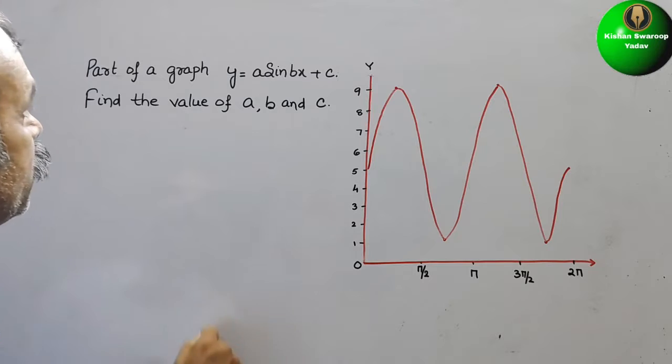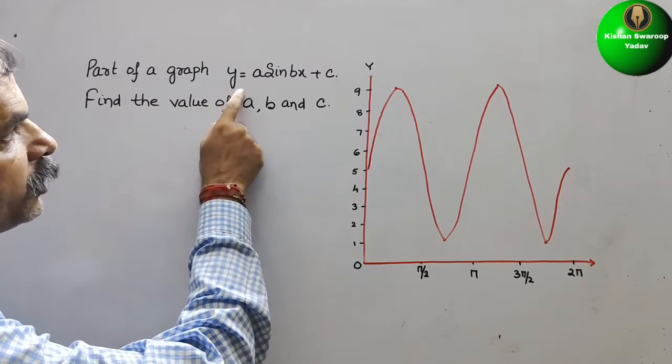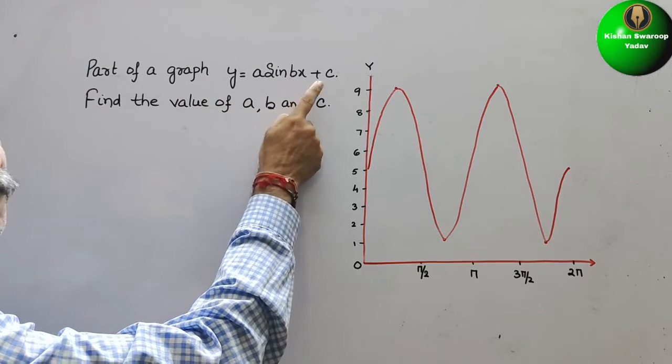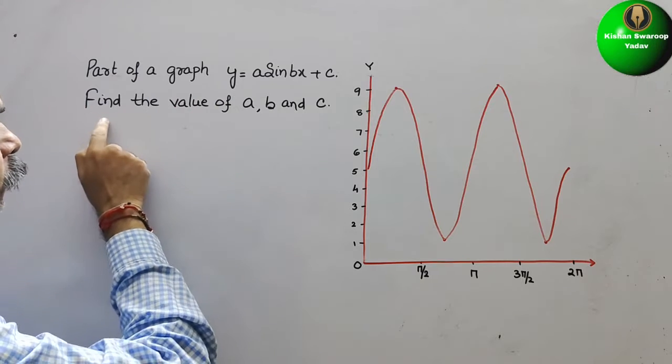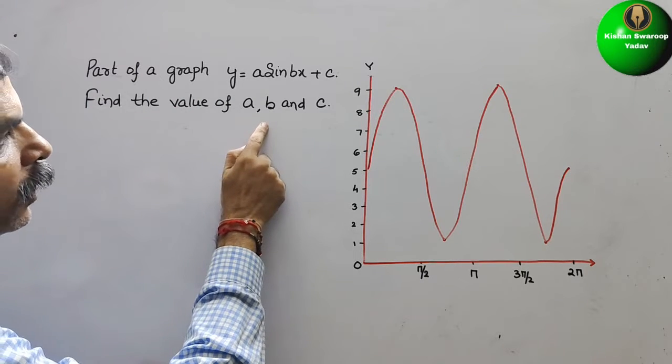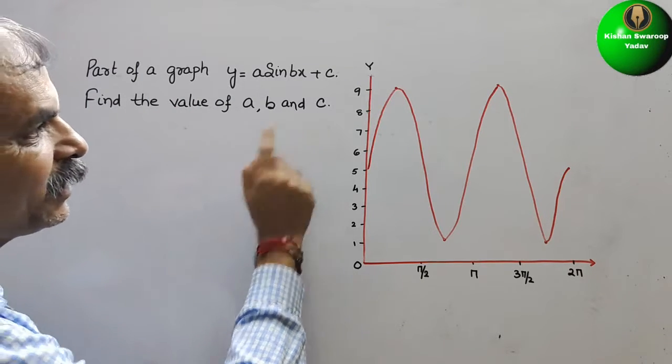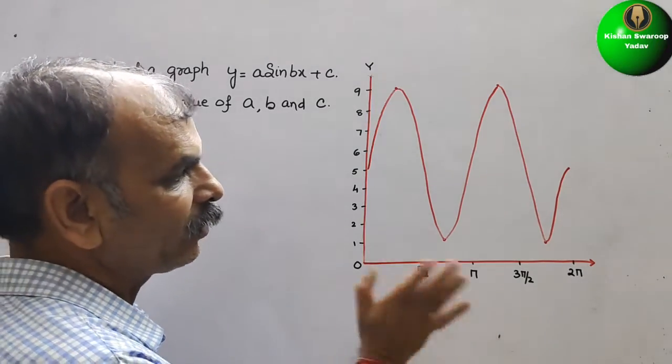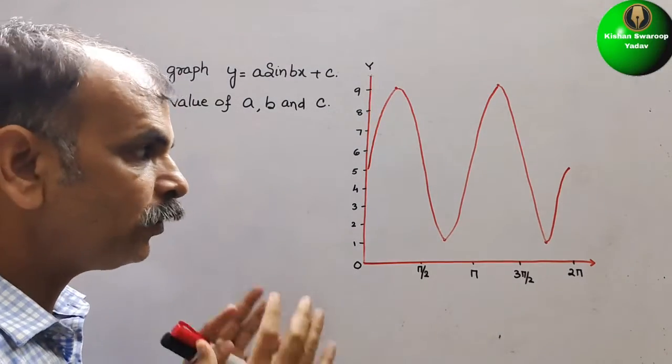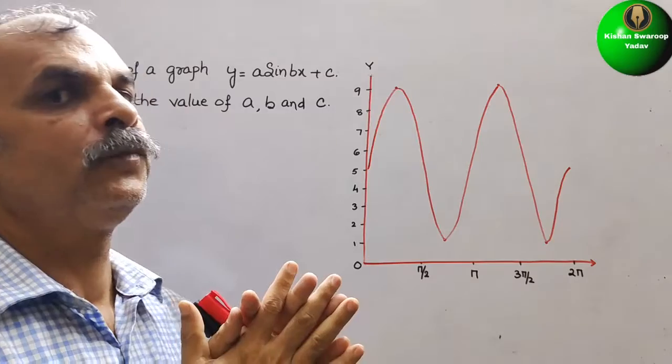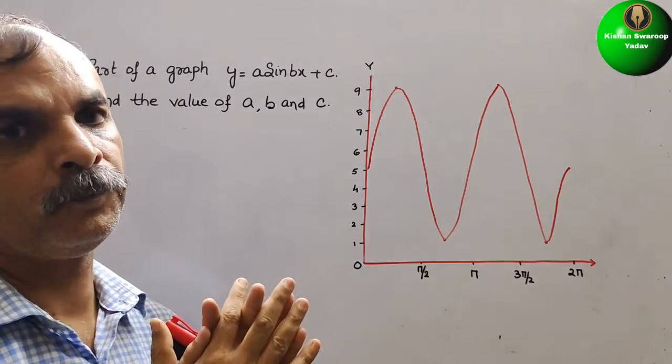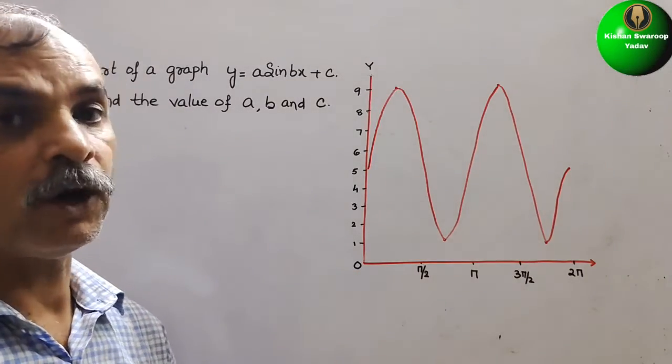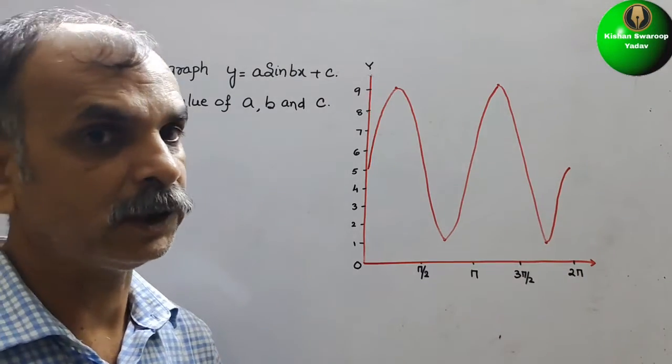Your question is, part of a graph y is equal to a sin bx plus c, find the value of a, b and c. So this is your graph. So we have to see how they have drawn. So first thing what they have given, that we have to see.